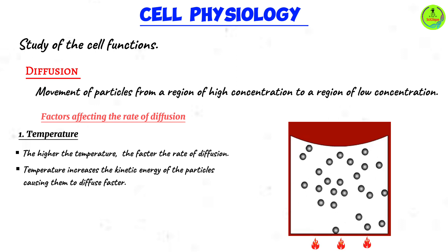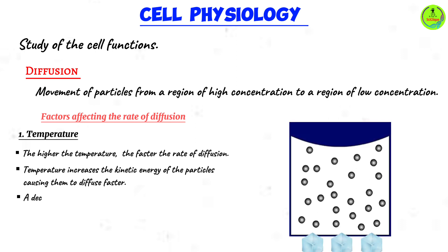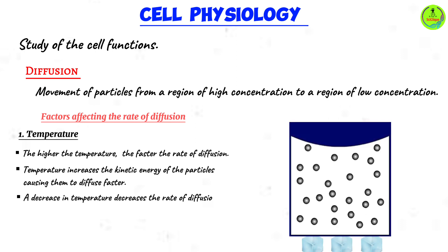The more kinetic energy that particles have, the faster the rate of diffusion. It causes the particles to move faster, therefore increasing the rate of diffusion. If you lower the temperature, you decrease the kinetic energy of the particles, therefore decreasing the rate of diffusion.